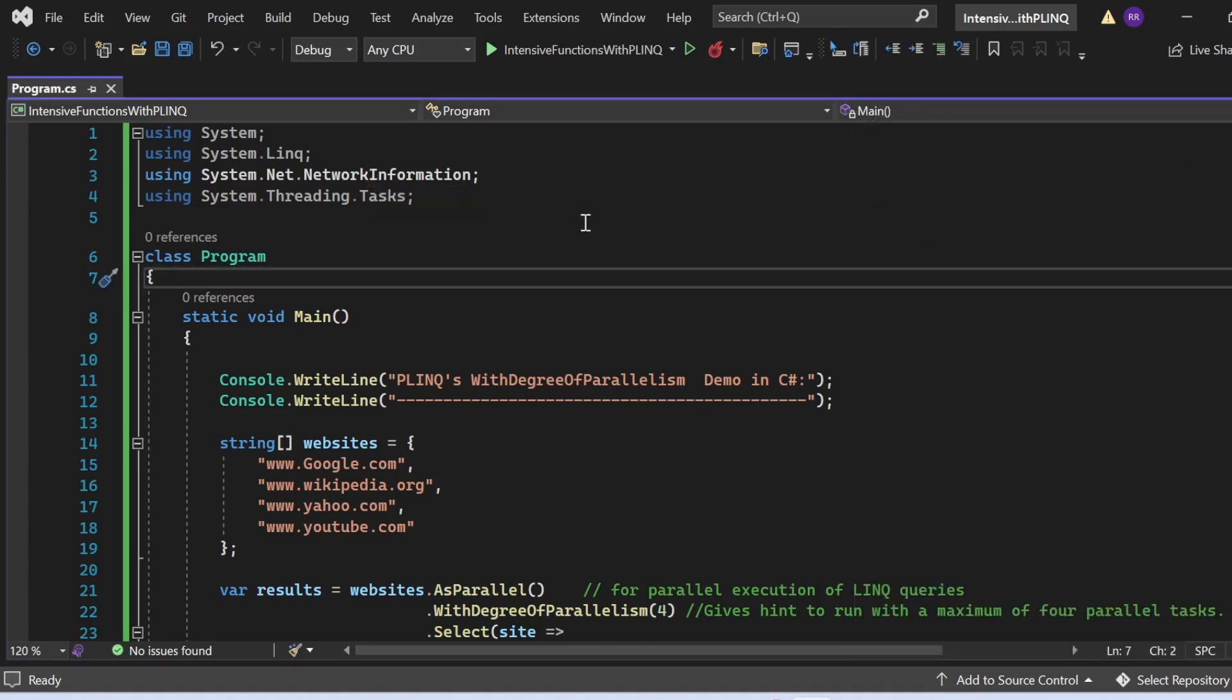In Program.cs file, first of all I imported the necessary namespaces: using System for basic functionality, using System.Linq for LINQ operations, using System.Net.NetworkInformation for network related operations, and System.Threading.Tasks for task-based asynchronous programming.